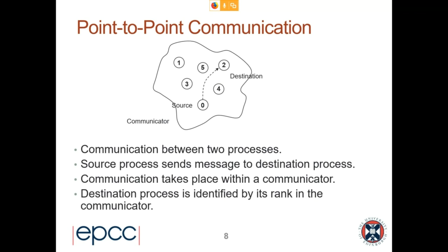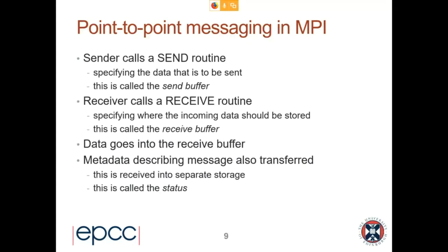The default communicator is always MPI_COMM_WORLD, which simply contains every rank that has been launched by the MPI launcher. You can define your own communicators and there are good reasons for doing so. The destination process is always identified by its rank in the communicator you provide — you always have to provide the communicator even if it is just MPI_COMM_WORLD. The rank is not a universal thing; it is specific to that communicator.